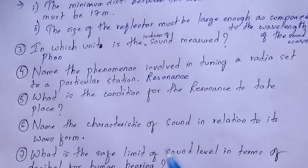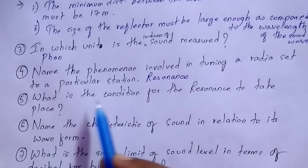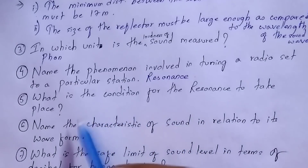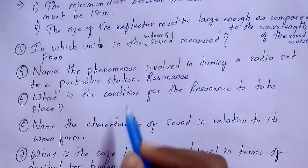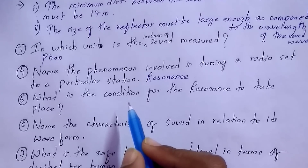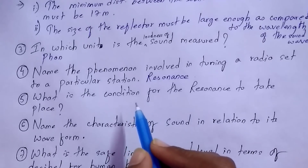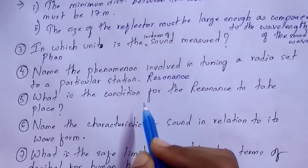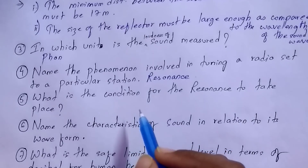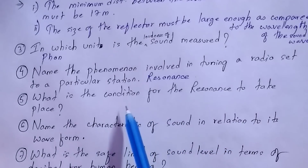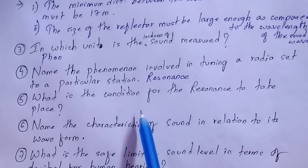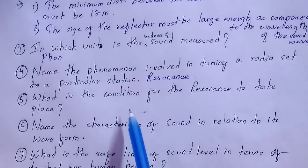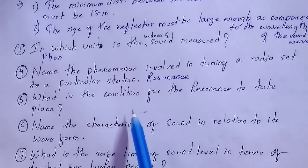Question number five: what is the condition for resonance to take place? The condition for resonance to take place is that the frequency of the externally applied force must be equal to the natural frequency of the body.